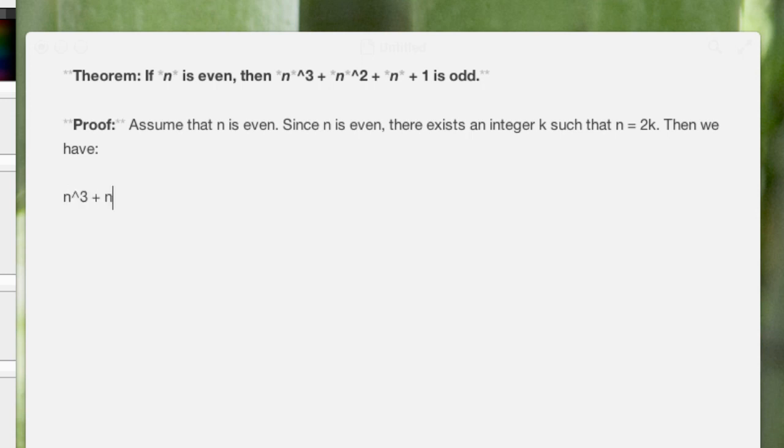Okay, then we have n cubed plus n squared plus n plus 1 equals 2k cubed plus 2k squared, oops, plus 2k plus 1. And then I'll just kind of artificially put some spacing here to line up the equations. This is important, too, lining up your equations along the equal signs. And do the math here, 8k cubed plus 4k squared plus 2k plus 1.